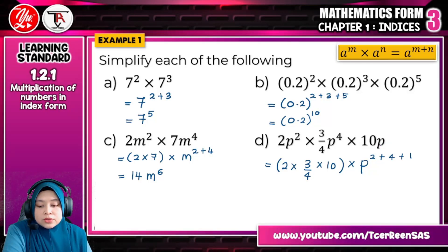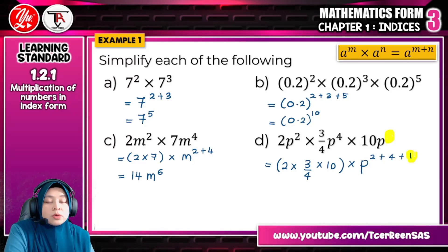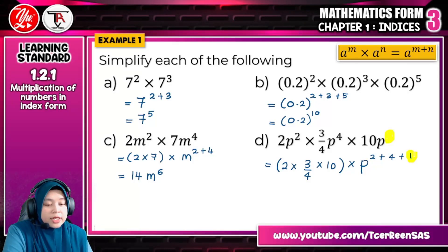2 plus, because it is darab here. The indices must be added together. 2 plus 4 plus, here. Please remember that if any variable does not have any index here, if no indices here means it takes the value of 1. Kalau tak ada apa-apa di atas tu bermaksud 1, bukan tak ada or 0. Sama lah jika ada nombor di depan tiada, P ni ia bermaksud ada 1. So the final answer, you find 2 times 3 over 4 times 10, and the answer is 15 and P to the power of 2 plus 4 plus 1 equals to 7.